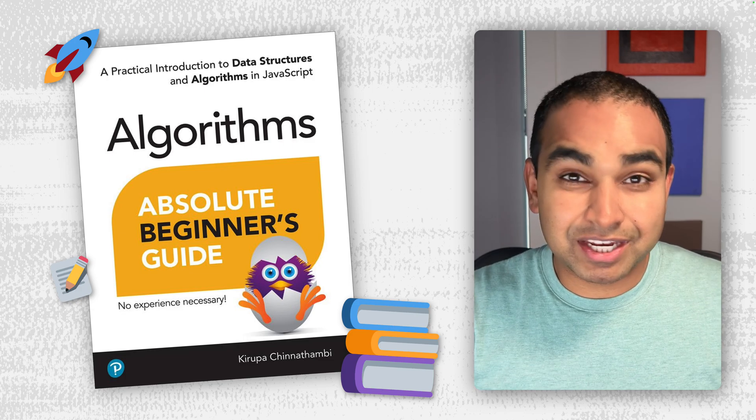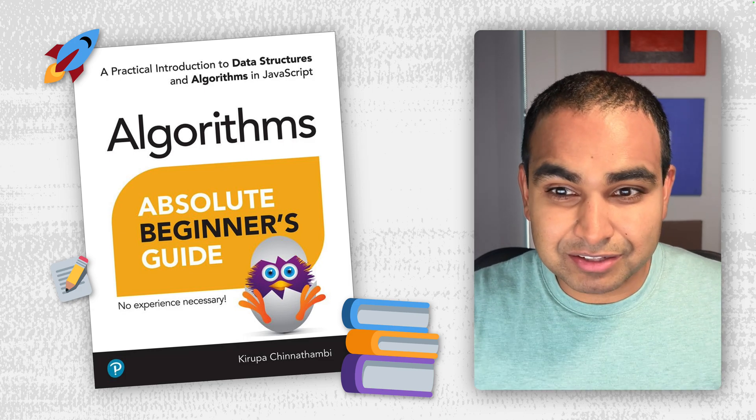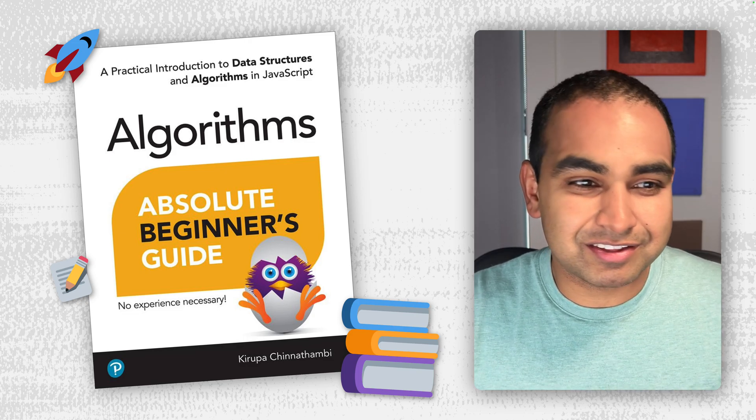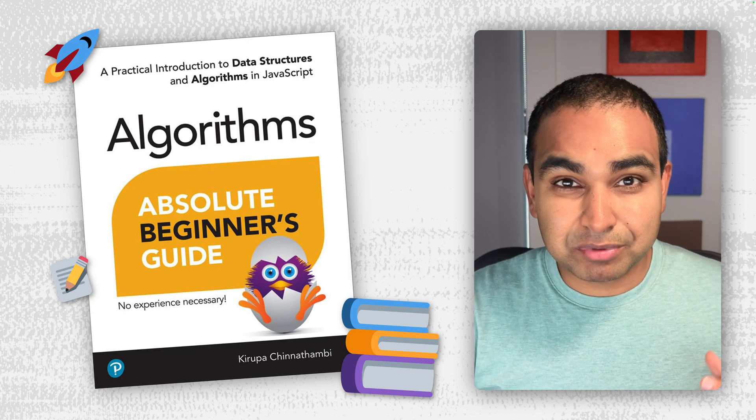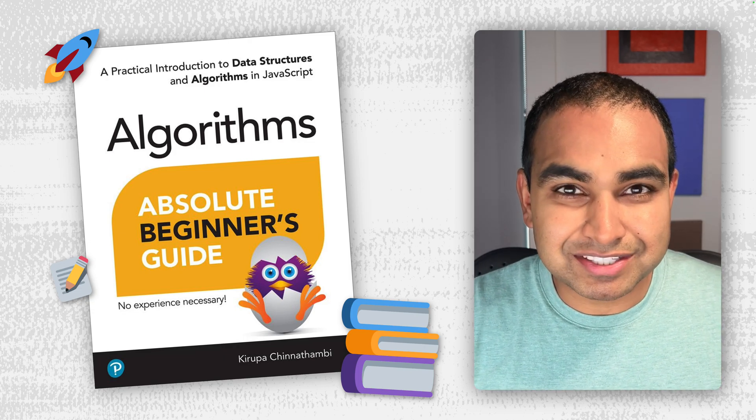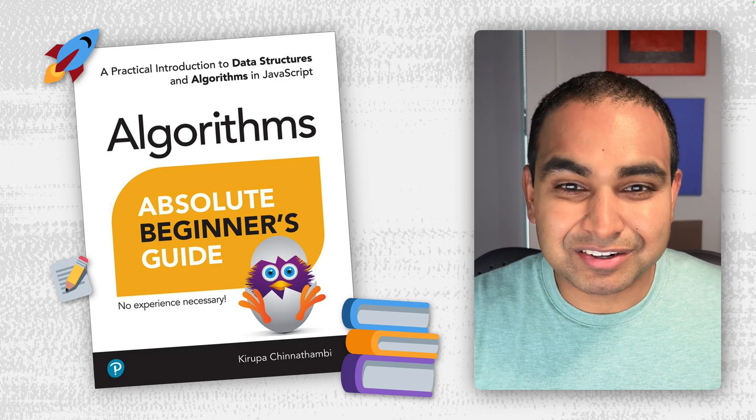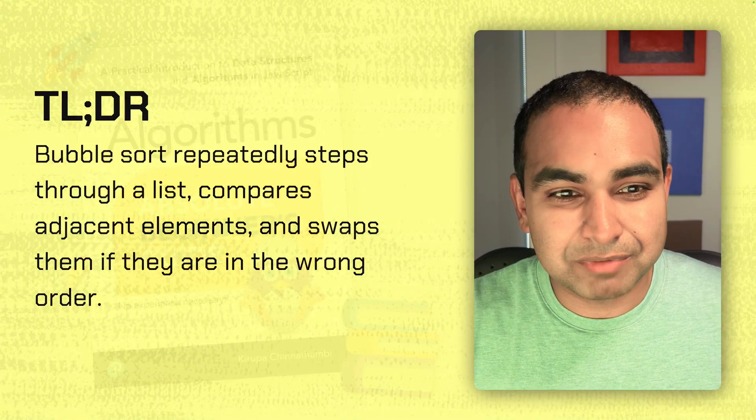I just want to take a step back and let you know that if you want to learn more about data structures and algorithms in great detail while still being very clear and concise, check out my best-selling book, Algorithms Absolute Beginner's Guide, available in physical bookstores, virtual bookstores, and the book is also available in digital editions and Kindle and other formats, so definitely check it out. And now let's go ahead and talk about bubble sort.